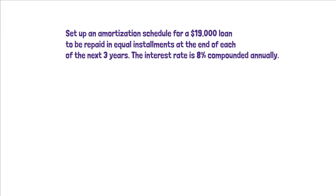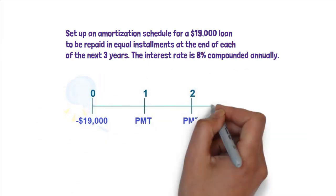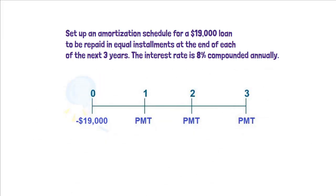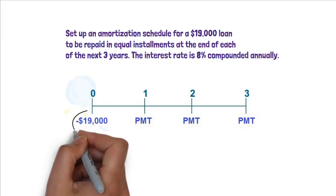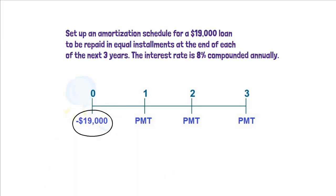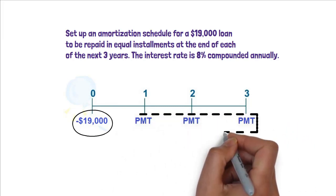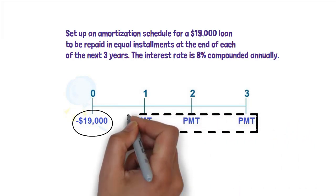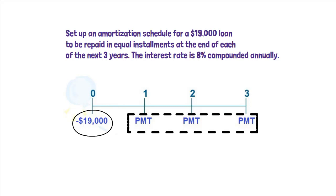Let's draw a timeline by converting this problem into a picture. My experience says when you can picture your problem, you are way ahead of solving the problem. As you can see in the timeline, you are borrowing $19,000 today and promise to pay an equal installment over three years. In total, you are going to make three payments. After your third payment, you basically paid the entire loan off.